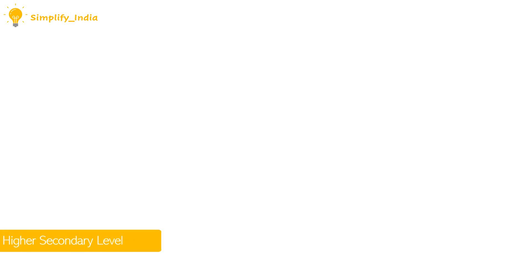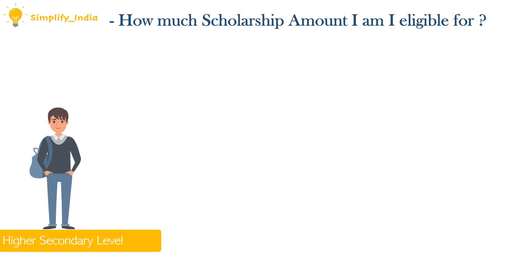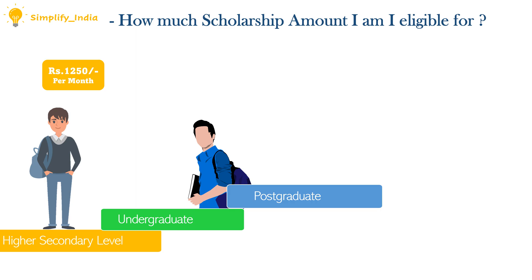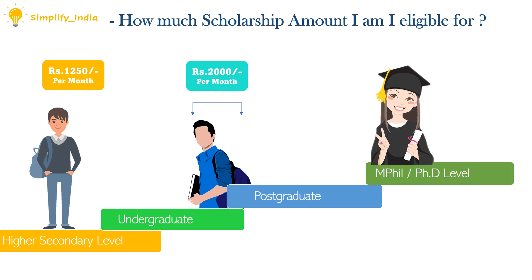Let us know the amount of scholarship that a student can avail as a monthly scholarship. For higher secondary level, they will be granted rupees 1250 per month. For undergraduate and postgraduate students, they will be granted rupees 2000 per month, and for MPhil and PhD level it will be as per the UGC norms.